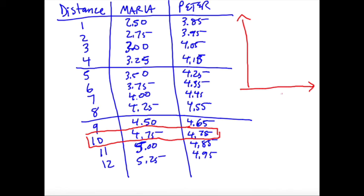How would this look on a graph? I'm going to make a very crude graph. Distance, money. Maria starts low at $2.50 and adds a little bit each time. So her graph is going to look like this. Peter starts at a higher price, $3.85, but his growth rate is smaller. Now, there will come a certain point where at 10 miles, both of those lines cross each other.